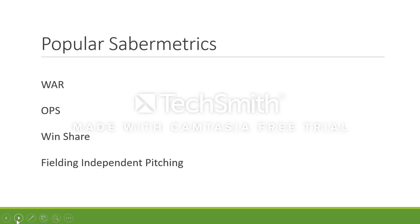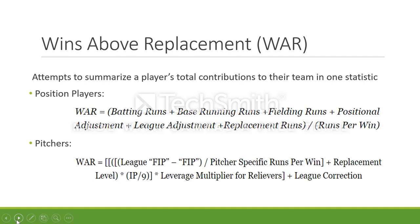These are some of the more popular Sabermetrics categories used in baseball today. Wins Above Replacement, or WAR, is an attempt to answer the single most important question in baseball: how valuable is each player to his team? The goal is to provide an independent, objective, and holistic measure of player value.